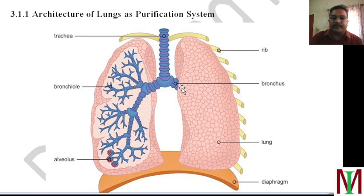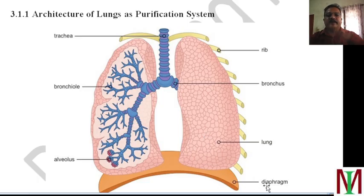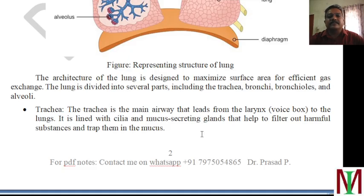Architecture of the lung as a purifier system — the architecture shows the air passage: we call it trachea, bronchia, bronchioli, and at the tip of the bronchioli there is the alveolus. There are ribs covering the lung, and at the bottom there is the diaphragm — the up and down movement of the diaphragm makes us breathe in and breathe out. The trachea is the main airway that leads from the voice box — the larynx — to the lungs, lined with cilia and mucus-secreting glands which help to filter out harmful substances and trap them in the mucus.